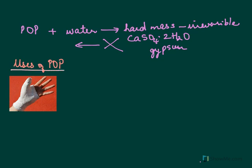Here you can see a picture of a fractured hand. What is used to keep the hand in place is POP. POP is used for fractures of the hand or leg — the doctor applies a plaster of POP so you cannot move the limb and it heals faster. POP is also used in making toys and decorative ceilings.